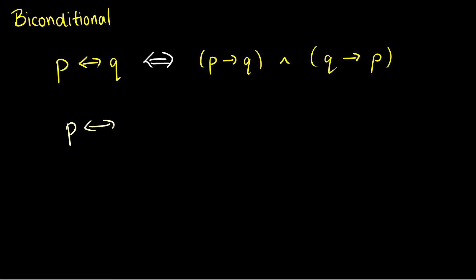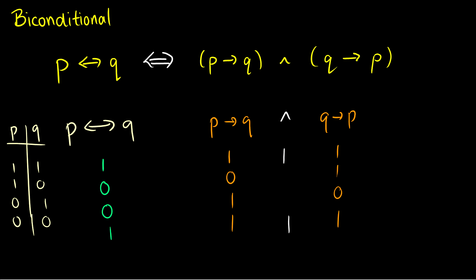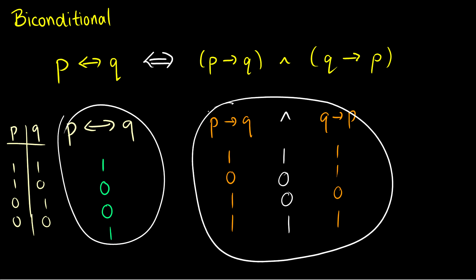We can verify this in a truth table. P if and only if Q is 1, 0, 0, 1 — true when values are the same. P arrow Q is 1, 0, 1, 1, and Q arrow P is 1, 1, 0, 1. Their conjunction is true only when both conjuncts are true — in the first and last rows — and false in the second and third. So P if and only if Q equals P arrow Q and Q arrow P.